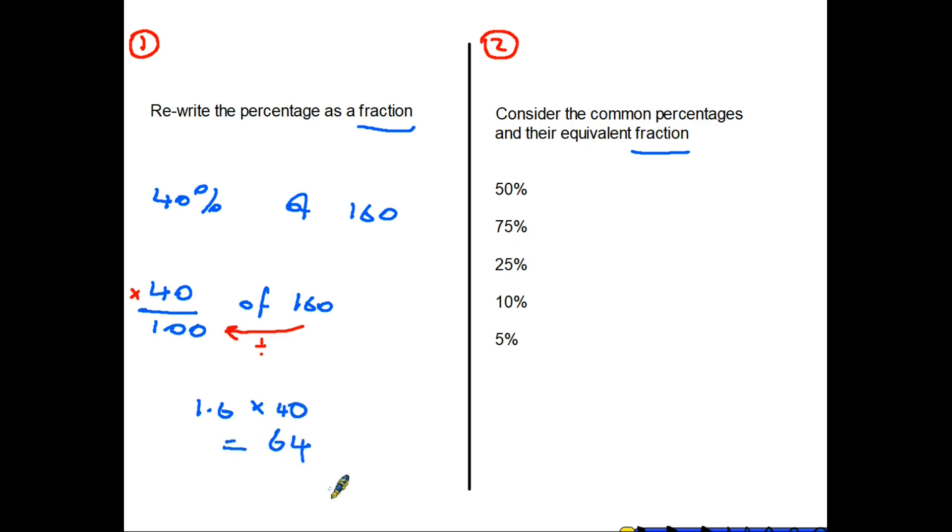Method 2: consider the common percentages and their fractions. So in this case we need to look at which of these we might want to use. So 40 percent of 160 - well 10 seems to be the obvious one to go for here again. So 10 is 160 divided by 10, so that's 16.